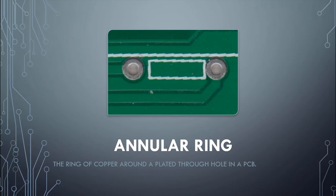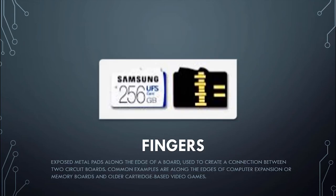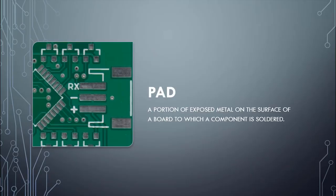Annular rings are right next to the silk screen box — that's where you would insert a through-hole component and then solder it to the other side. Drill hits are where we want the drill to be; inaccurate drill hits are caused by dull bits, and you'll run into these a lot if you start looking at PCBs. Fingers are metal pads exposed along the edge of a board — like those gold sections on RAM memory sticks. Here we have a micro SD card that has fingers on the back. Pads are a portion of exposed metal on the surface where we solder components.